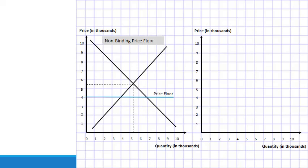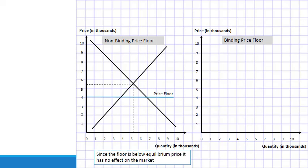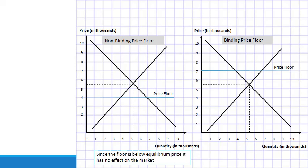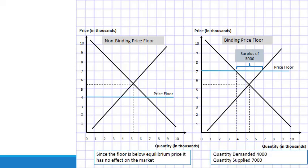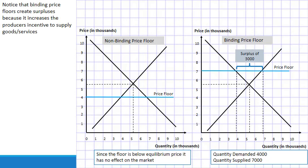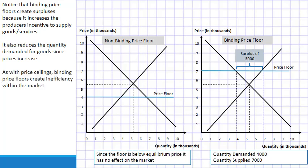Looking at a side-by-side comparison: Graph A shows a non-binding price floor below equilibrium, which has no effect on the market. Graph B shows a binding price floor above equilibrium — since the floor is above market equilibrium, it becomes binding and a surplus develops between quantity demanded and quantity supplied. The surplus is 3,000 units because the supply of 7,000 exceeds consumer demand of 4,000. Binding price floors create surpluses because they increase the producer's incentive to supply while reducing the quantity demanded since prices increase. As with price ceilings, binding price floors create inefficiency within the market.